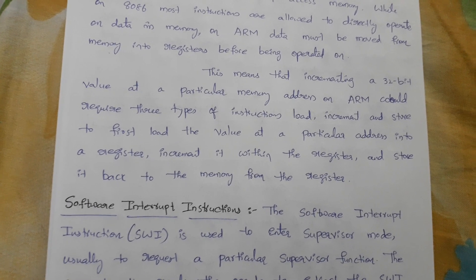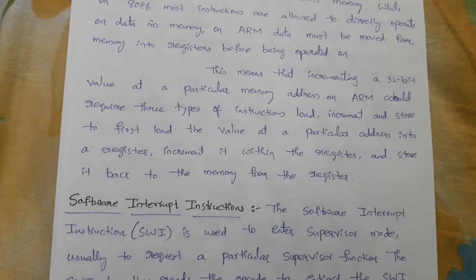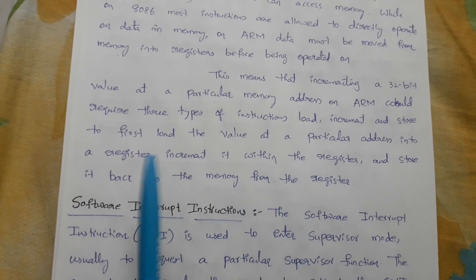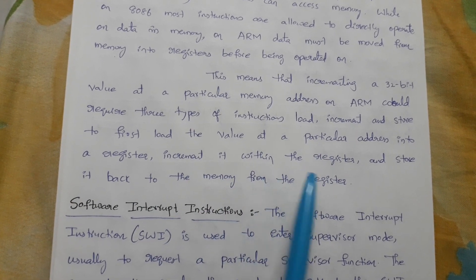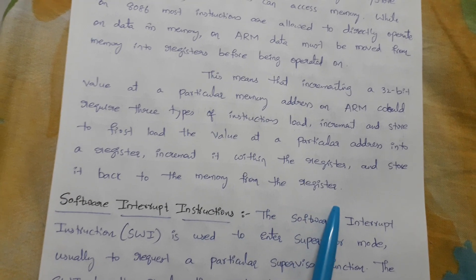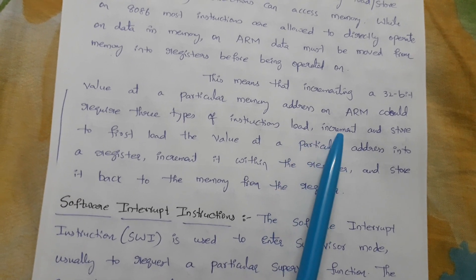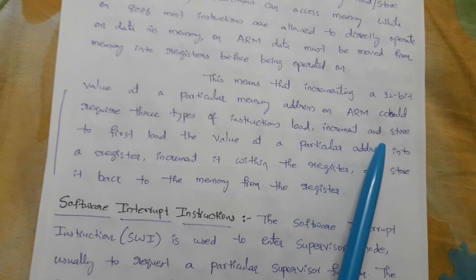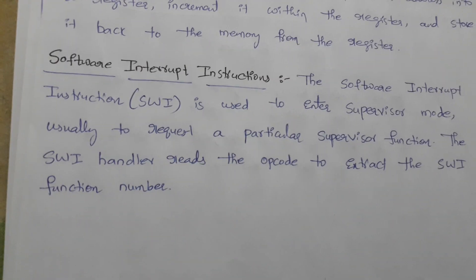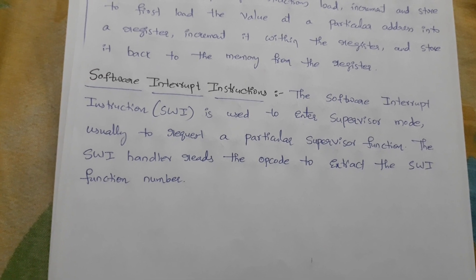To increment a particular value, you first load the value at a particular address into a register, increment it within the register, and then store it back to memory from the register. So first we load the instruction, next increment, and next we store the particular address of the data.